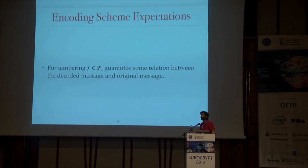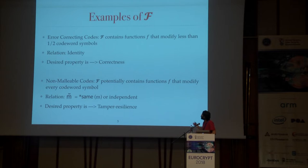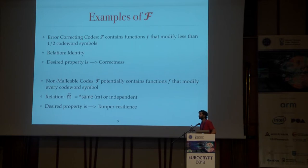What do we expect from these schemes? For tampering functions coming from certain classes, we want to guarantee a nice relation between the decoded message and the original message. A well-known example is error-correcting codes, where the tampering function family consists of functions which can modify at most half the codeword C, and the desired property is that the decoded message is exactly identical to the original message — this gives us correctness.